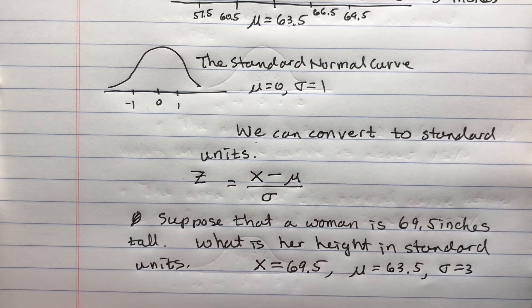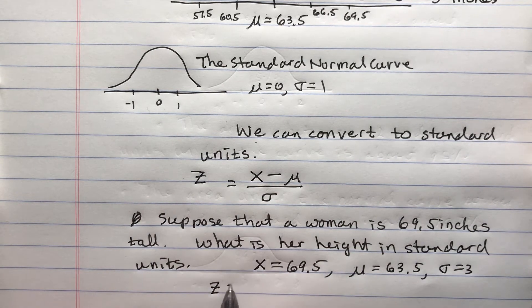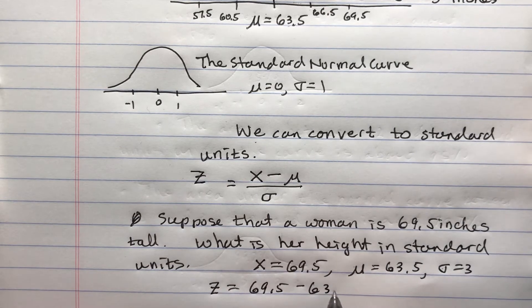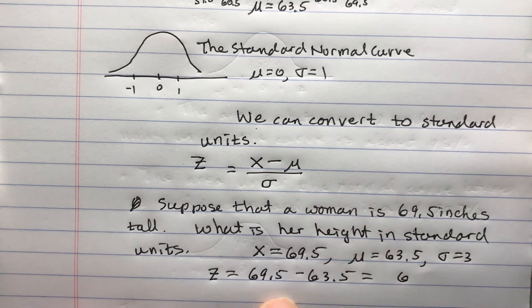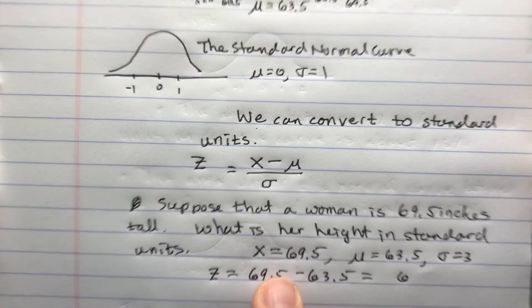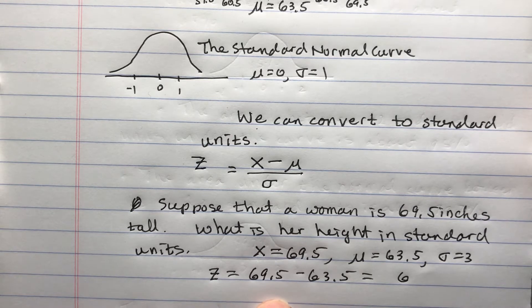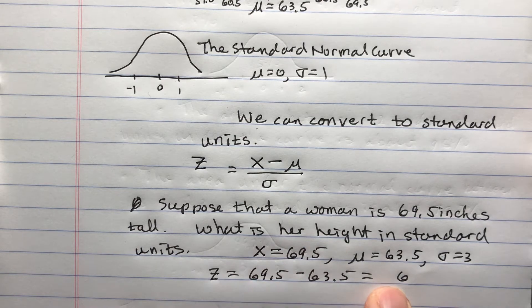If you take 69.5 and subtract 63.5, you get 6. This woman is 6 inches above the average height for women across America in 2003.